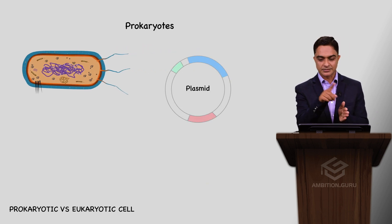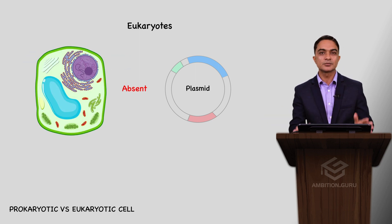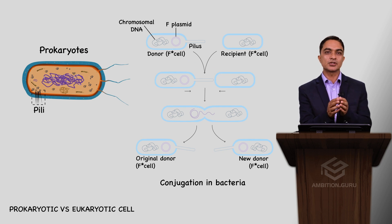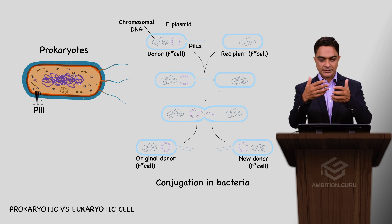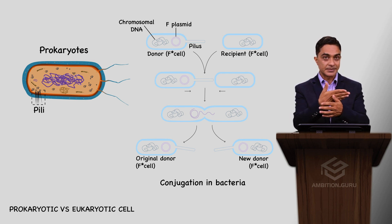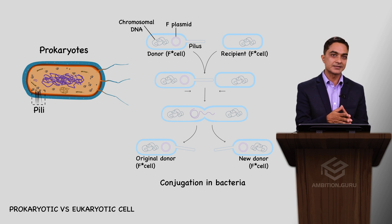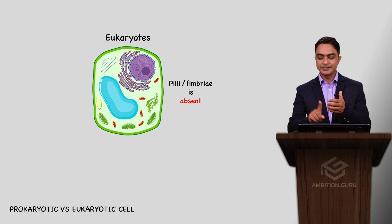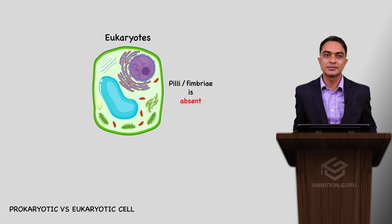Plasmids — a circular type of extra-nuclear DNA — are present in prokaryotes but absent in eukaryotes. Pili or fimbriae-like structures are present in prokaryotes (generally in gram-negative bacteria, helping in conjugation) but absent in eukaryotes.